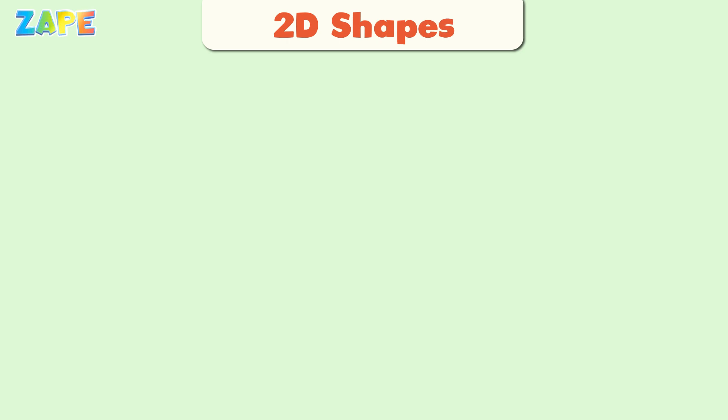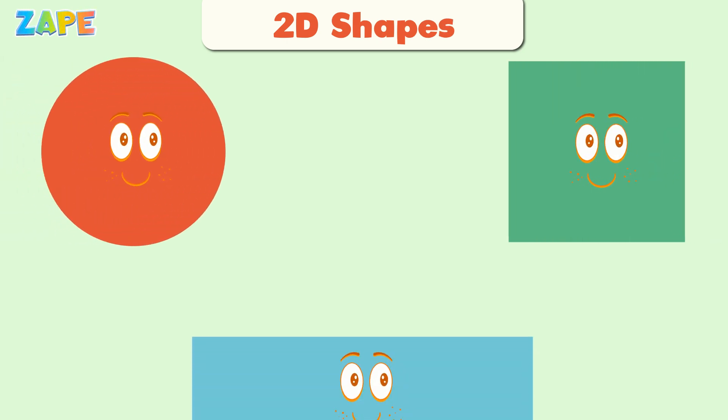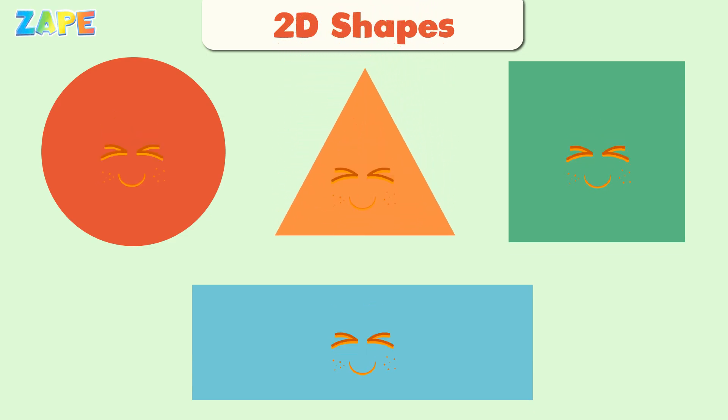Let's start with 2D shapes. 2D means flat, you can't hold them. You can only look at them or draw them. Here are some 2D shapes.